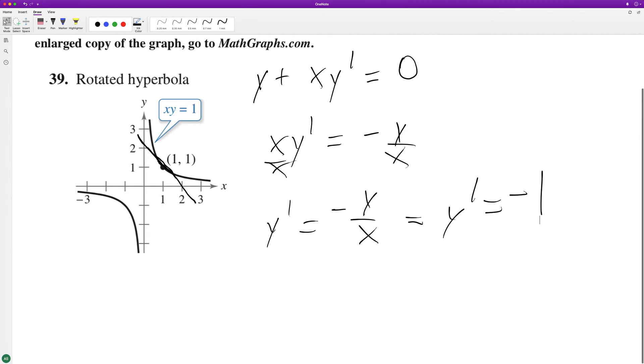I think I was right. So using the point-slope form, y minus y₁, in this case one, equals the slope times (x minus one).